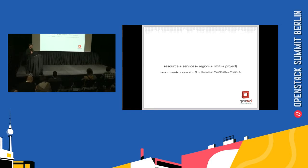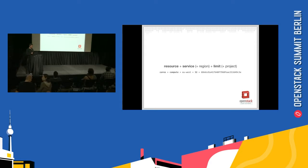So what does a unified limit look like? It essentially consists of three pieces of information: a resource, which is a key that describes the thing that we're limiting; the service that's responsible for it; and a limit, which is essentially an integer. There are also a couple of optional pieces of information, like regions, since not every service is deployed globally, and also projects.